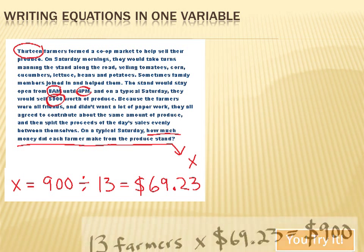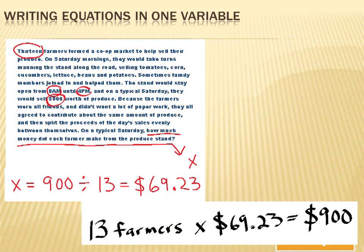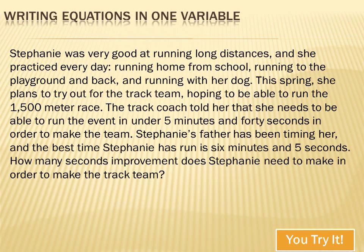Remember, there's a check in CUCCV. You check by plugging the answer back in: $69.23 times 13 farmers gives us the $900 they typically make on a Saturday. Give this next one a try — see if you can convert it into an algebraic expression and then solve it. Hit your pause key, try your luck, and then hit your forward key to move on to the answer.